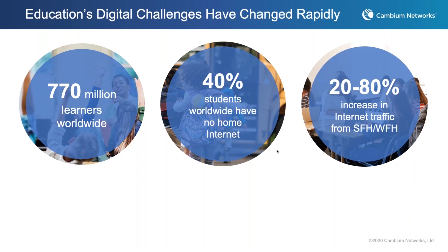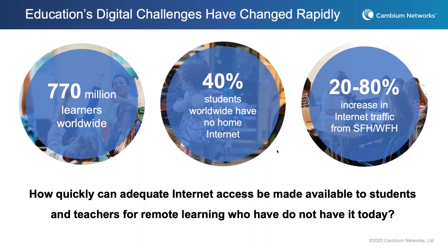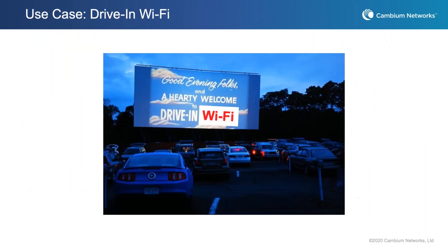We have seen a massive increase in activity at the home level for internet access. ISPs are looking at major shifts in terms of traffic and load on their networks — numbers ranging from 20% to 80% increases are being cited. A lot of business network traffic is shifting to the home, and a lot of folks are scrambling to handle this and figure out what to do. The core question is: how can we quickly adapt and provide access to support new online remote learning initiatives?